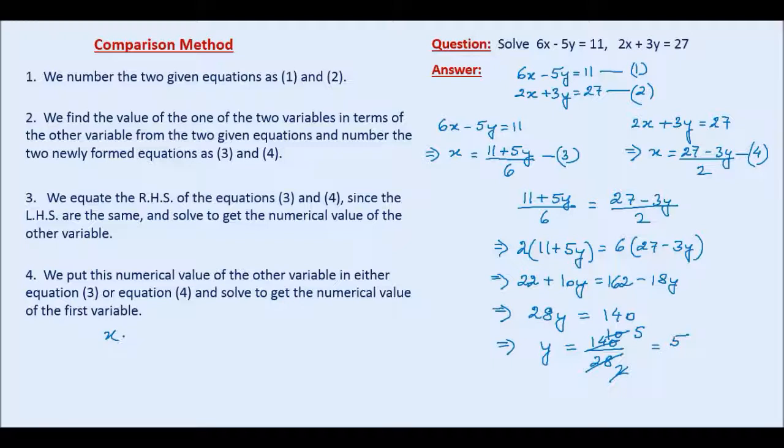We write the third equation which is 11 plus 5y over 6. This is equal to 11 plus 5 times 5, because y is equal to 5, over 6. And 5 times 5 is 25 plus 11 is 36. So this is equal to 36 over 6 which gives us the numerical value of x as 6. So we write the answer, x equal to 6 and y equal to 5.